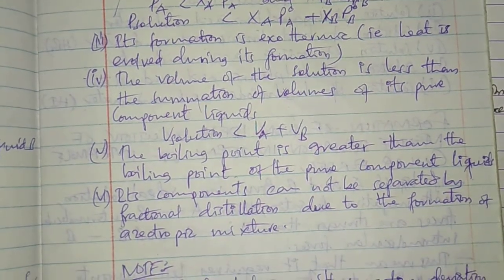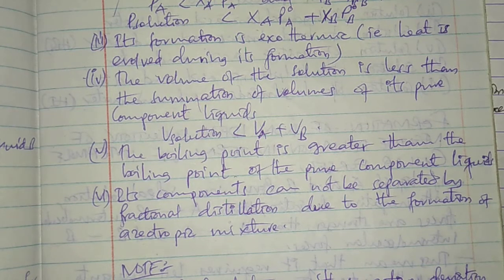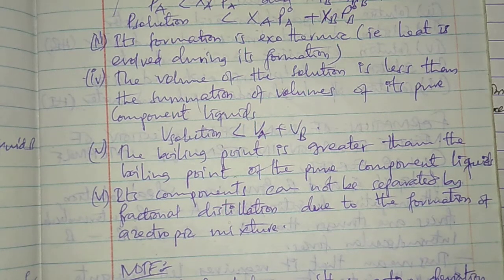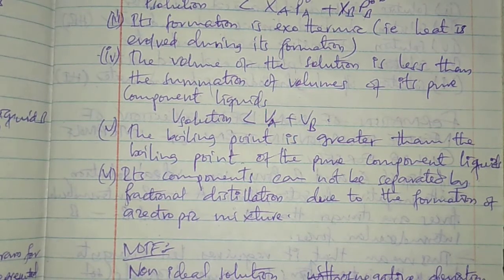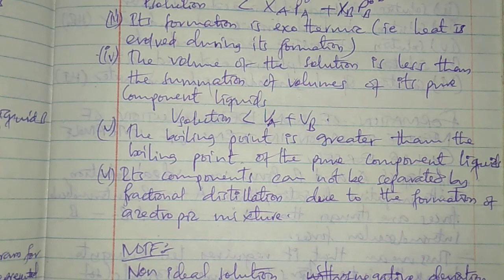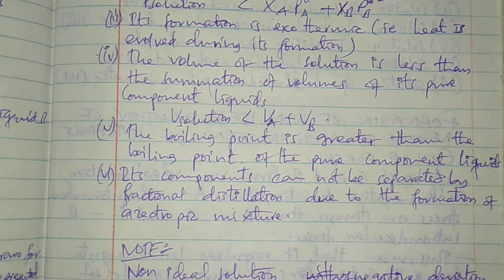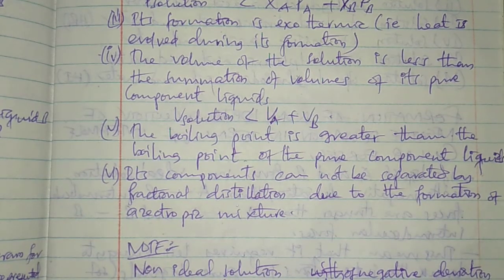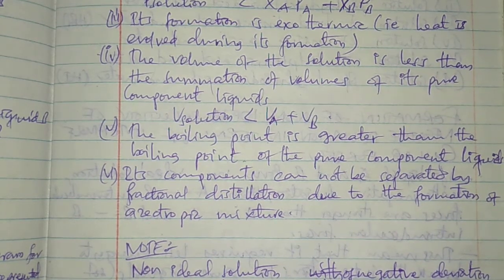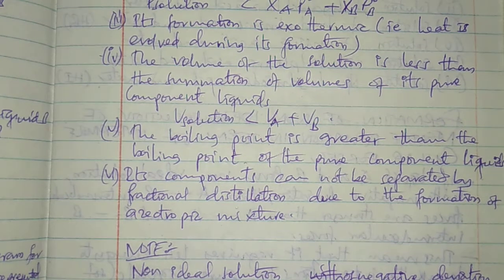Fifth, the boiling point will be greater than that of the pure components. Why will it be greater? It is because of the change in intermolecular force of attraction - as the intermolecular force of attraction increases, the boiling point also increases. Sixth, the components cannot be separated by fractional distillation due to the formation of an azeotropic mixture.